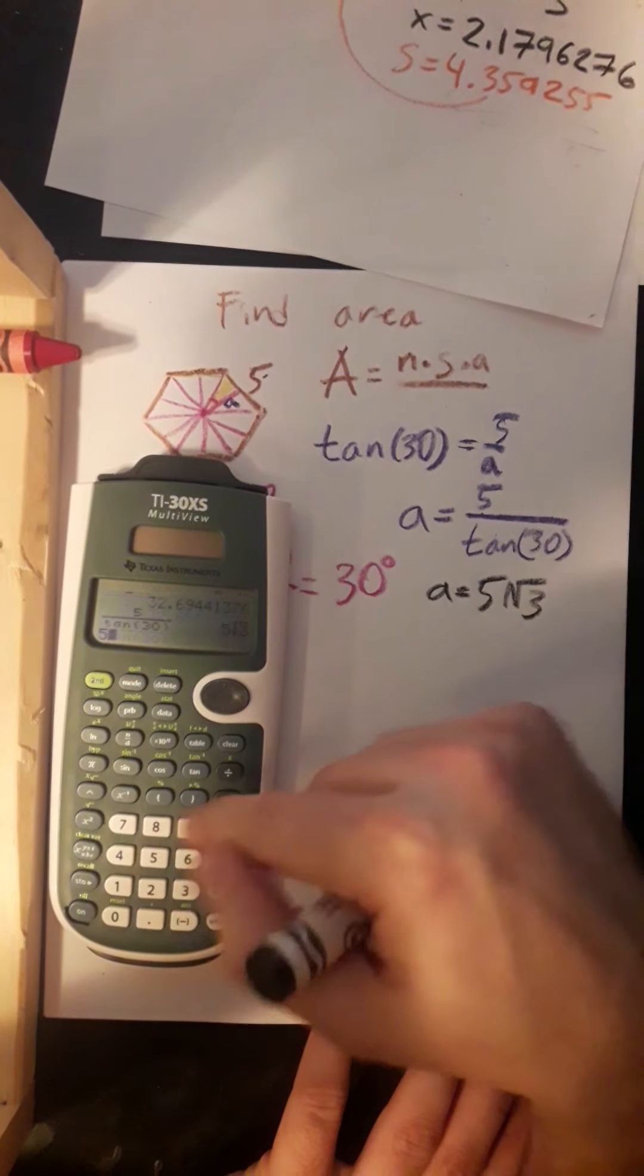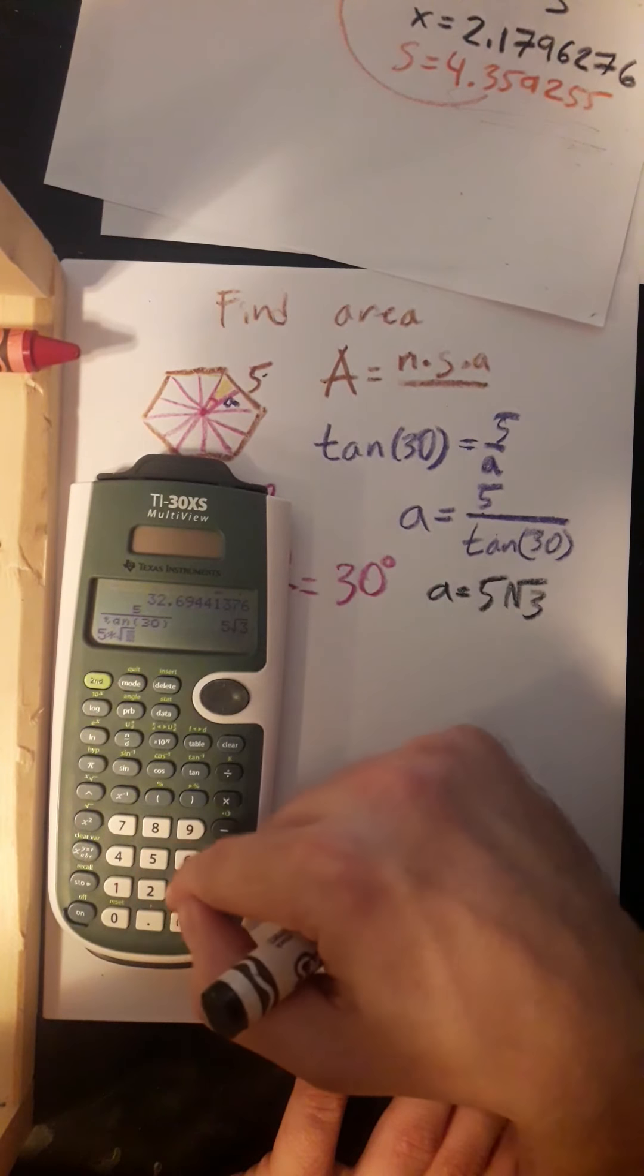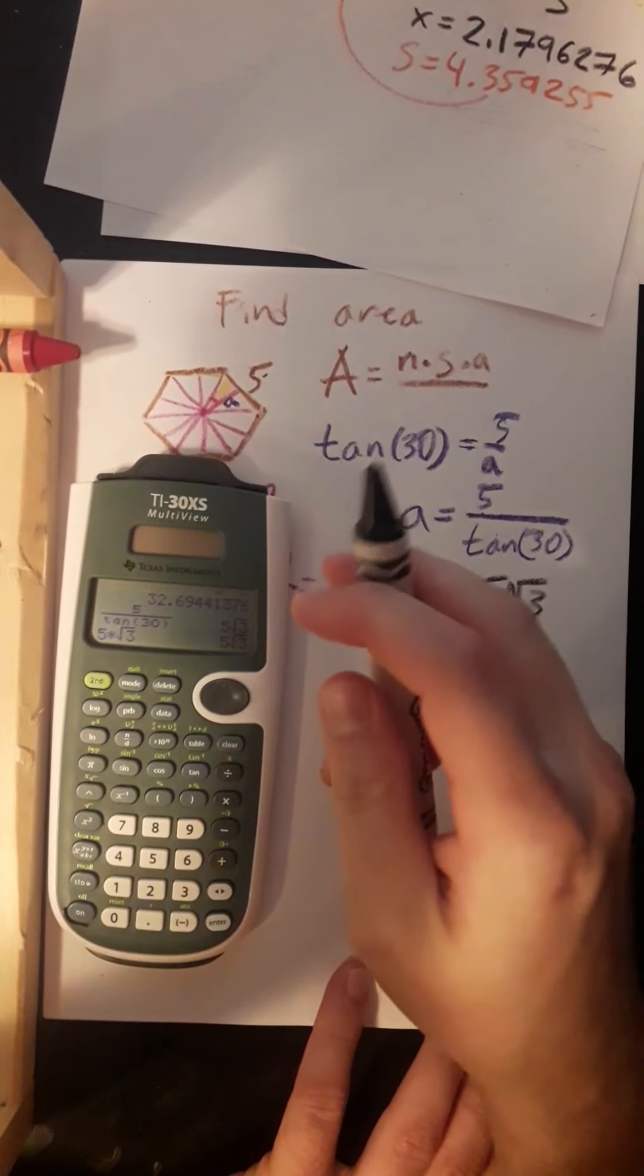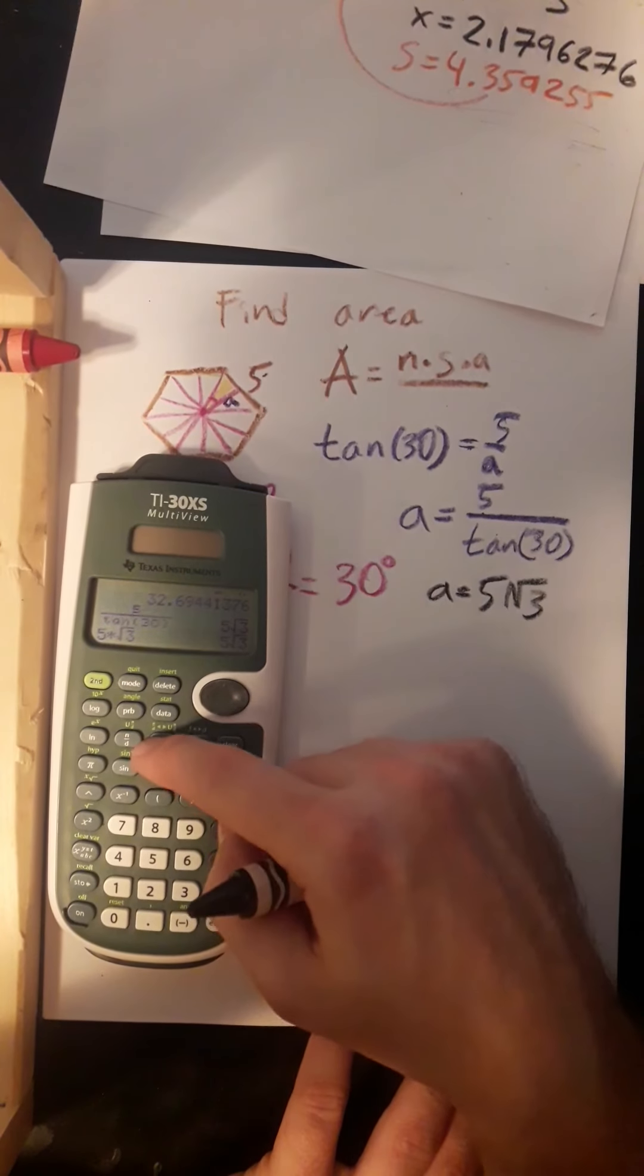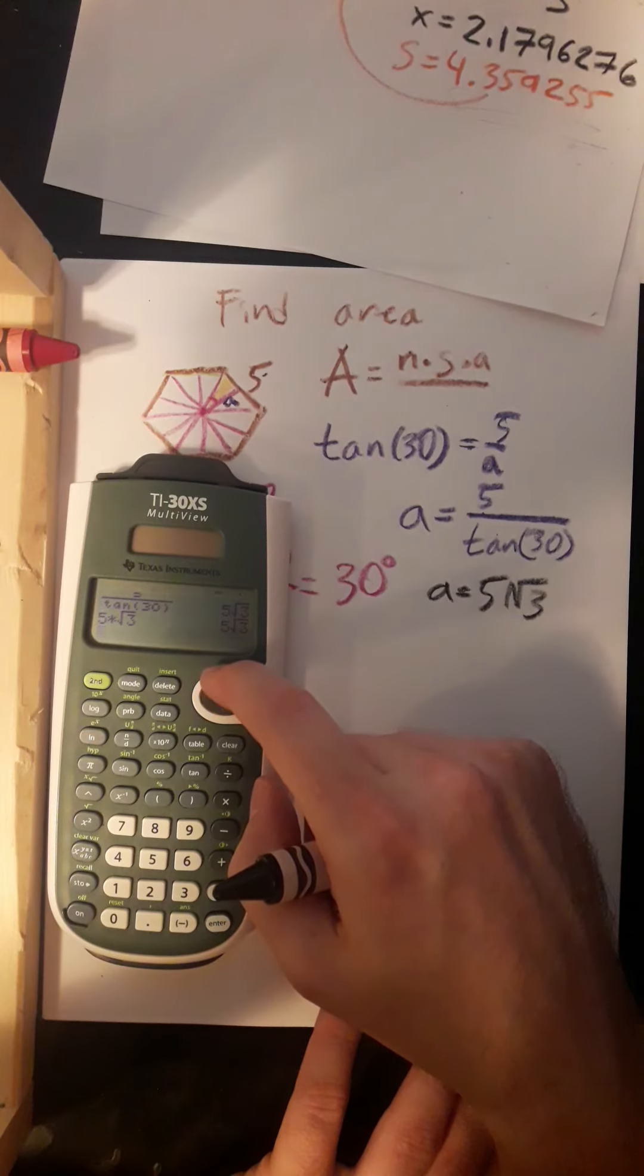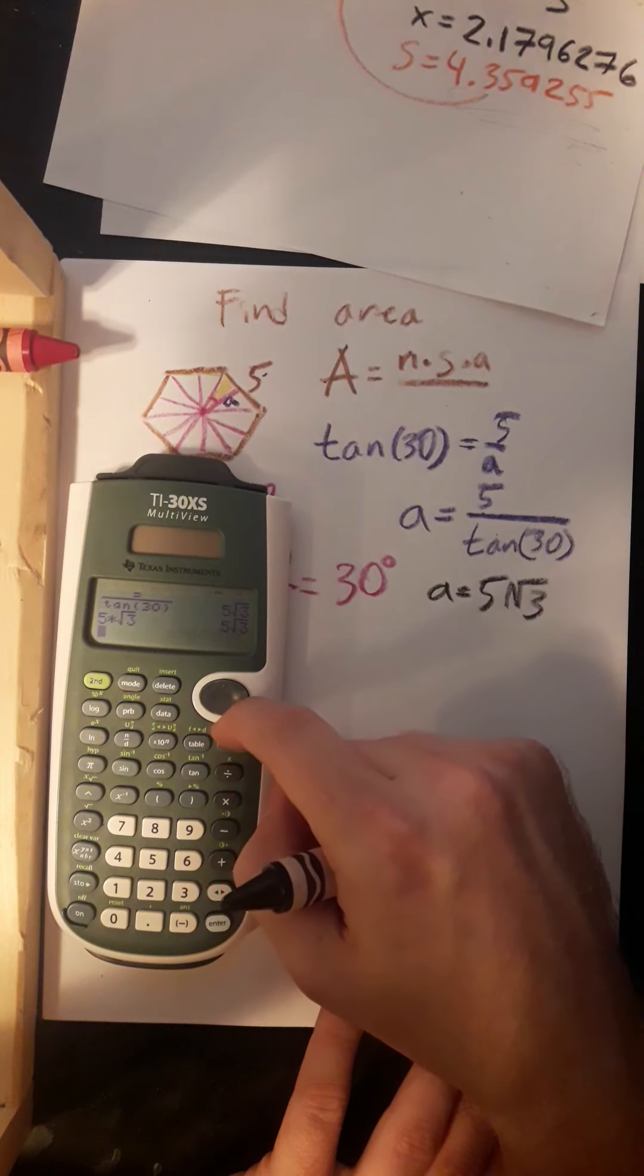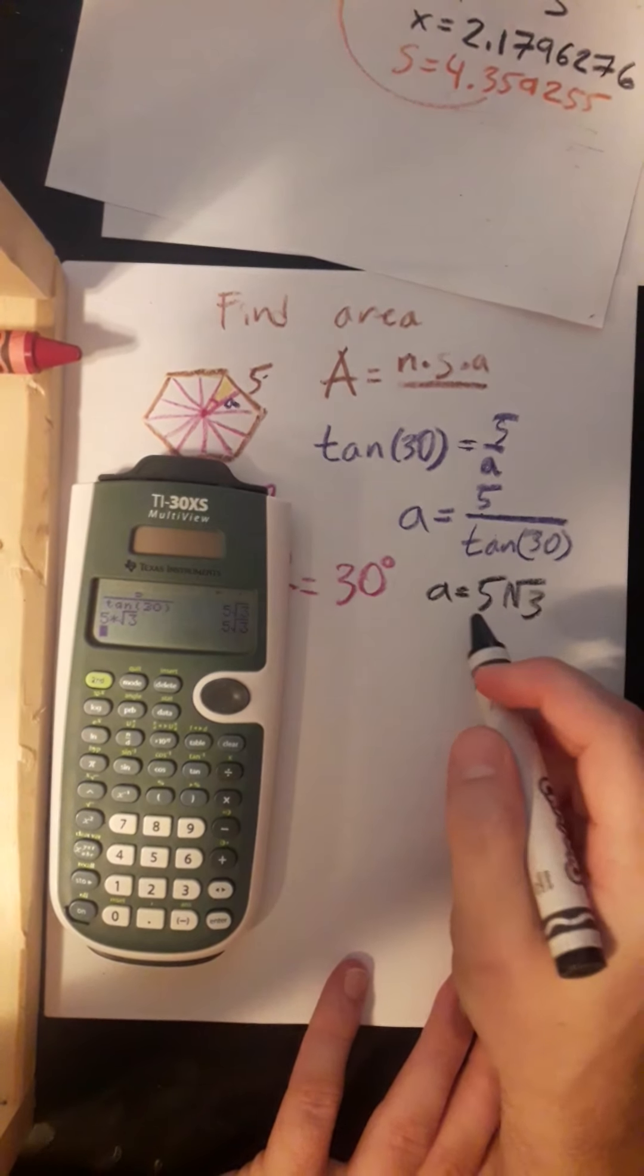I would really love to know what that is in non-square roots. So I'm just going to multiply 5 times the square root of 3. And my calculator does not want to give me a decimal equivalent of that. I'm just going to leave it as 5 square root of 3 since it won't give me anything else.